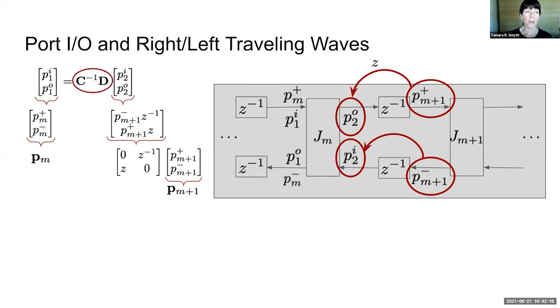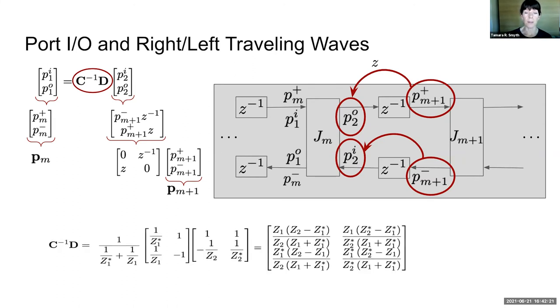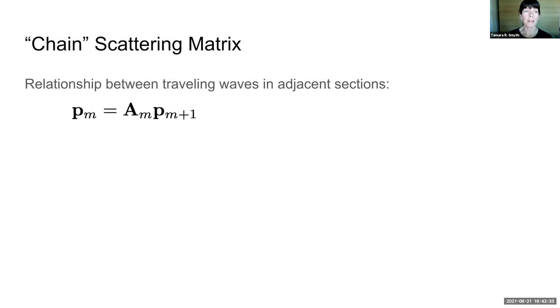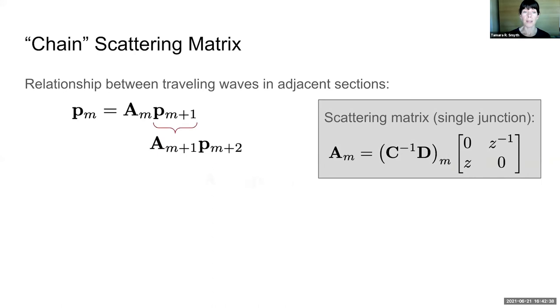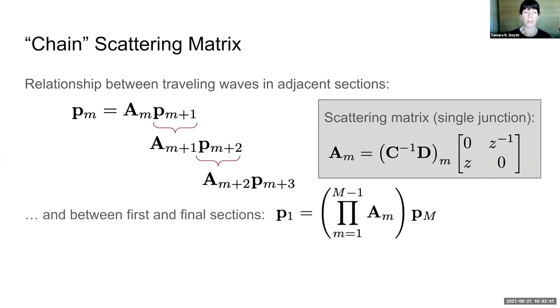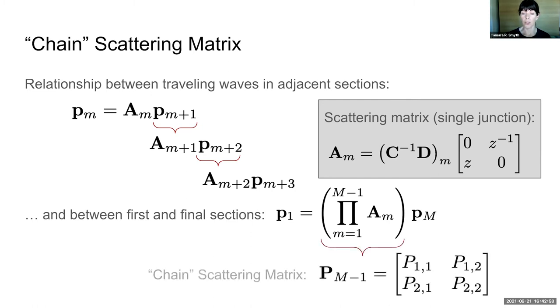The product of the inverse matrix C with D, given here, can be applied to each junction. When multiplied by the backwards diagonal matrix, we get our scattering matrix A sub M. This gives us the relationship between traveling waves in adjacent sections. And this can be applied repeatedly, so that we have an expression giving us the relationship between traveling waves in the first and final sections. This is our chain scattering matrix.